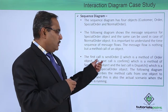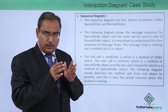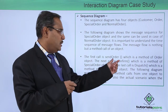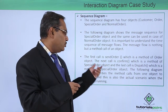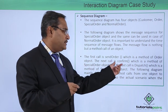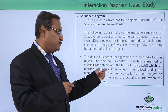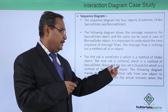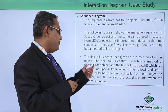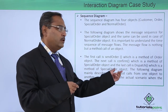The first call is send order, which is a method of the order object. The next call is confirm, which is a method of the special order object. And the last call is dispatch, which is also a method of the special order object.